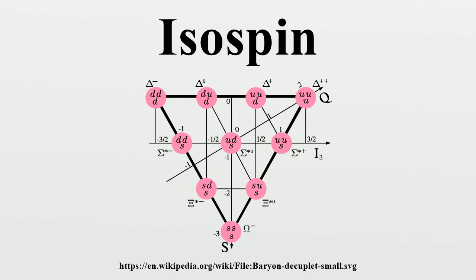As further particles were discovered, they were assigned into isospin multiplets according to the number of different charge states seen: two doublets I equals 1/2 of K mesons, a triplet I equals 1 of sigma baryons, a singlet I equals 0 lambda baryon, a quartet I equals 3/2 delta baryons, and so on.